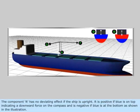The component R has no deviating effect if the ship is upright. R is positive if blue is on top, indicating a downward force on the compass, and is negative if blue is at the bottom as shown in the illustration.